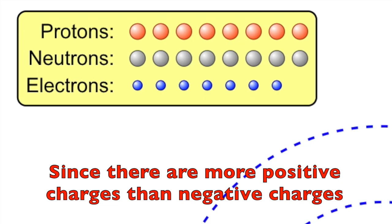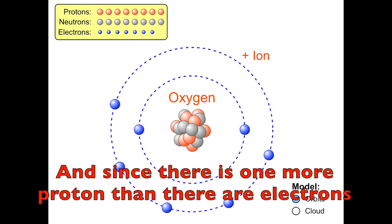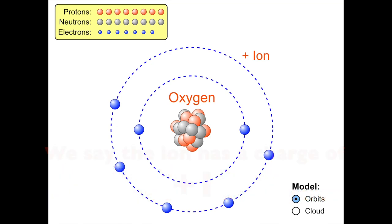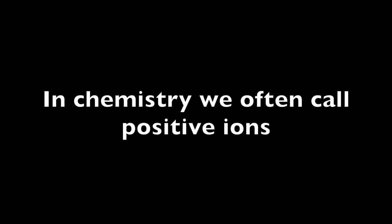Since there are more positive charges than negative charges, the atom is now what we call a positive ion. And since there is one more proton than there are electrons, we say the ion has a charge of plus one. In chemistry, we often call positive ions cations.